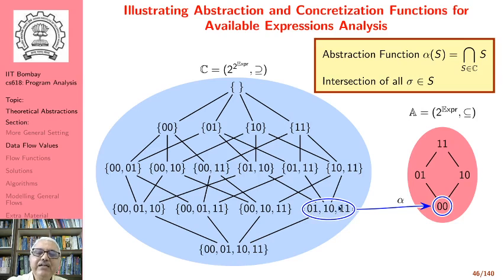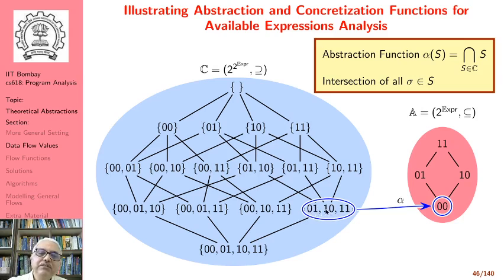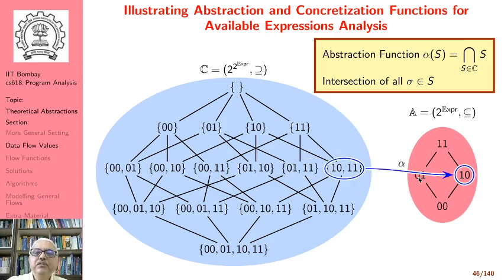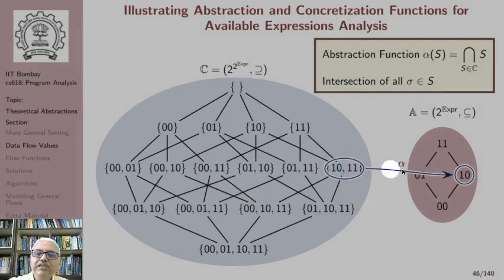If we look at a set where along one path the second expression is available and along the other path both expressions are available, our abstraction function gives 01 — that is the data flow value computed. Similarly, if along one path the first expression is available and along the other both are available, the abstract value corresponding to this set is 10.